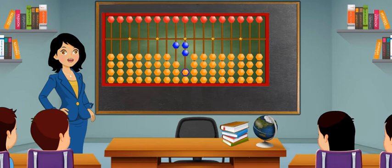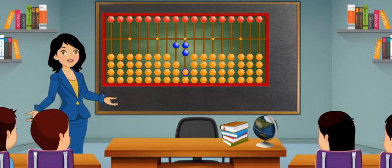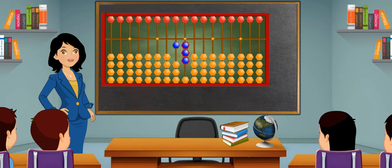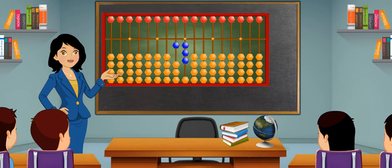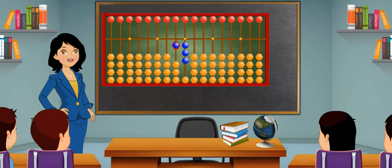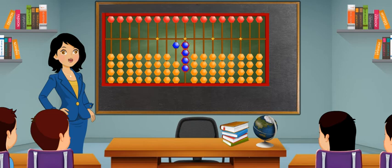To show number 13, one on the tens place will remain the same and bring one more earthen bead up on the ones place to show three. This is number 13. To show number 14, one on the tens place will remain the same and bring one more earthen bead up on the ones place to show four. This is number 14.